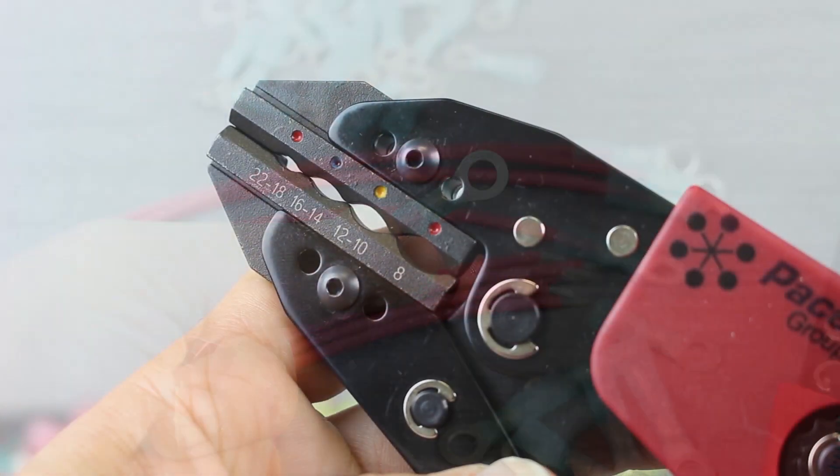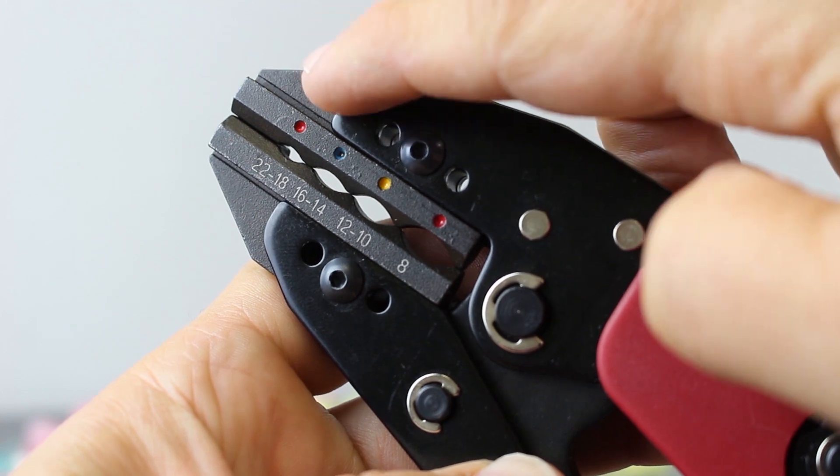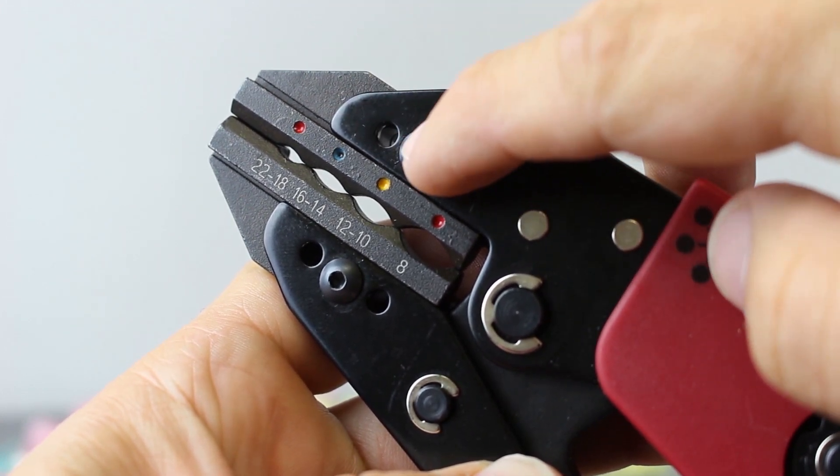Make sure you insert the terminal into the proper crimp nest. Identification is made easy by the colored dots which should match the insulation on the ring terminal.